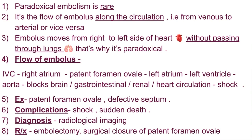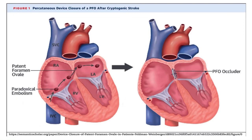Now let's talk about the flow of the embolus. Suppose a patient has a blood clot in the pelvic region or the leg region — through the IVC, that clot can come to the right atrium, and from the patent foramen ovale it reaches the left atrium. From the left atrium it reaches the left ventricle, creating an obstruction in the systemic circulation. In severe cases, renal infarction or gastrointestinal infarction can also be seen.